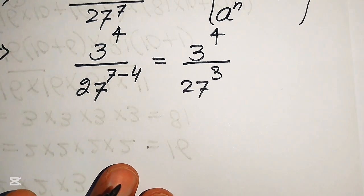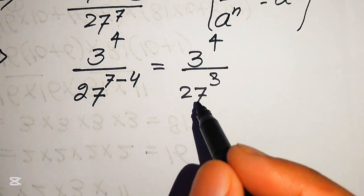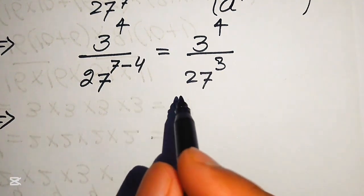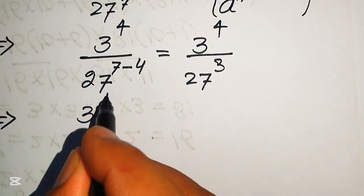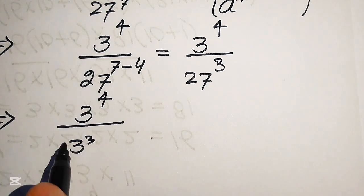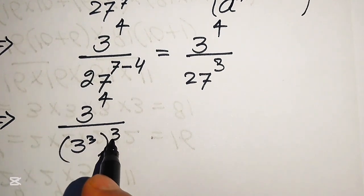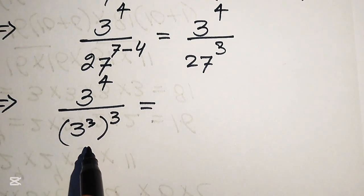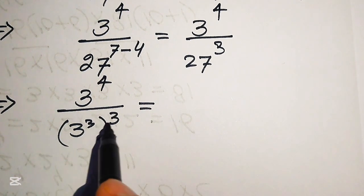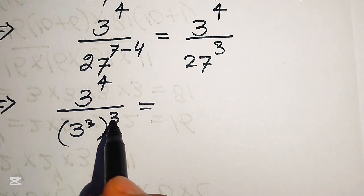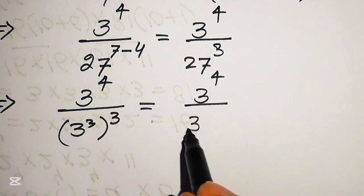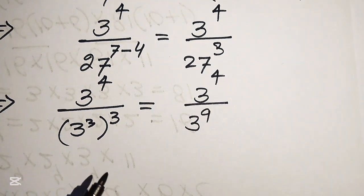We know that 27 can be written in prime factor form as 3 cubed. So the expression becomes 3 to the power of 4 divided by (3 cubed) to the power of 3. Applying the power-of-a-power law and multiplying the exponents, 3 times 3 gives 9, so we get 3 to the power of 4 divided by 3 to the power of 9.